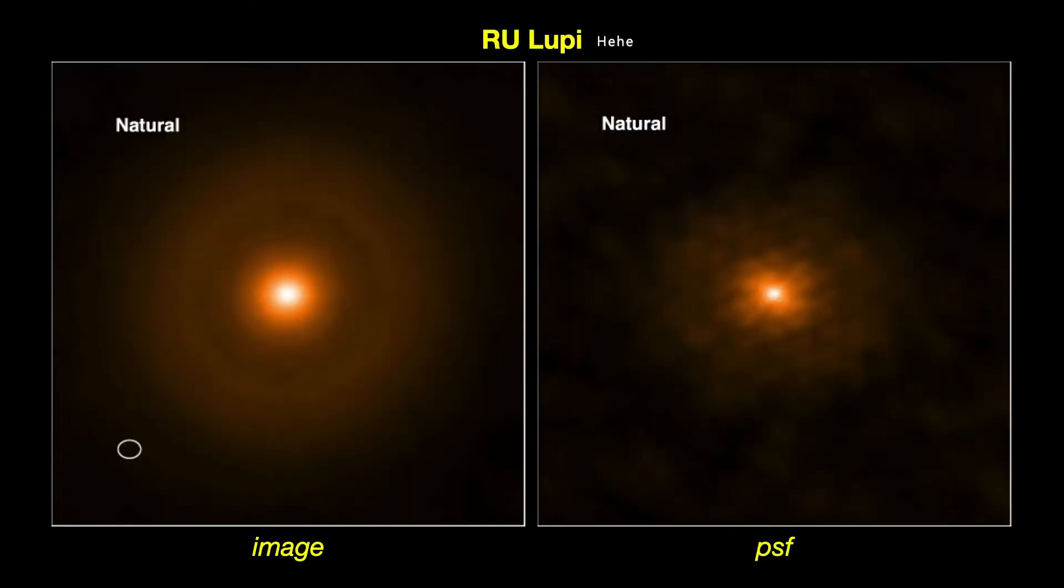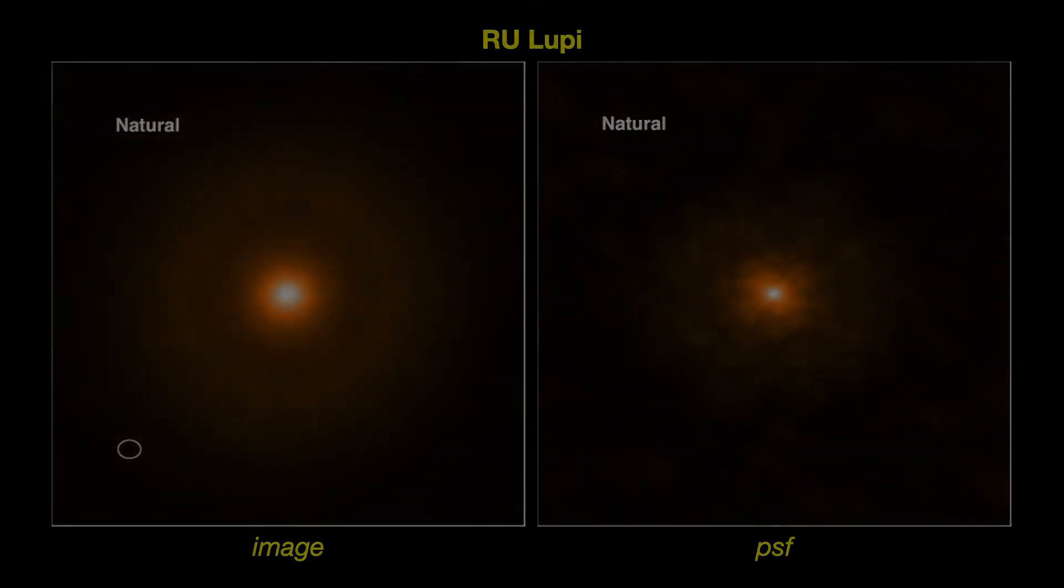Here again is RU Lupi, but now imaged using natural weighting. The full extent of the disk is now quite clear and smooth, but the point spread function, the beam, is larger and the side lobes are quite extensive. If your primary goal is to just detect a source and you need the maximum possible signal-to-noise from the dataset, then natural weighting is a clear choice.